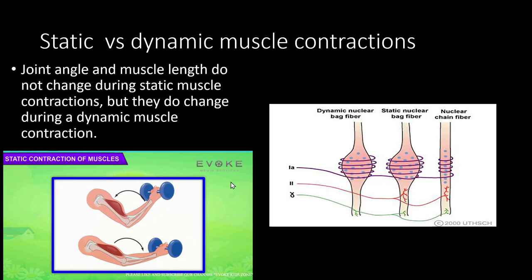There is a static and dynamic muscle contraction. During static muscle contraction, joint angle and muscle length do not change; the tension in the muscle increases but angle and length remain the same. During dynamic contraction, there is shortening of the contracting muscle and a change in the angle of the joints. These contractions are performed by nuclear chain and nuclear bag types of muscle fibers present in the muscle spindle.